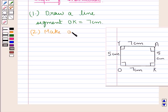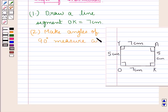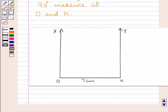In the next step, we make angles of 90 degree measure at O and at K. So we have made angles of 90 degrees at both O and K.